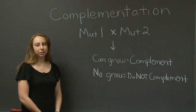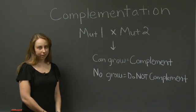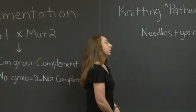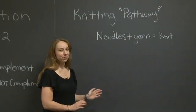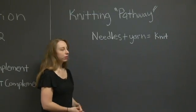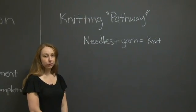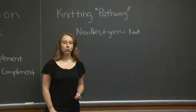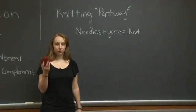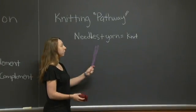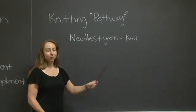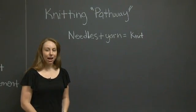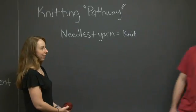So now, let me explain complementation yet another way. So over here, we have the knitting pathway. It's very simple and straightforward. So in order to knit, you need two things. You need both knitting needles, and you need yarn. When you have both of these things together, you can knit a nice scarf. So to explain how this is related to complementation, I've brought along my friend Robert to give us a hand.